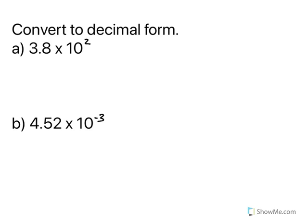Alright, so let's convert to decimal form. So I have 3.8 times 10 squared. Now, when I look at this exponent, this exponent is positive. That means my number is greater than 10 in decimal form. And this exponent of 2 tells us how many times we're going to move the decimal.